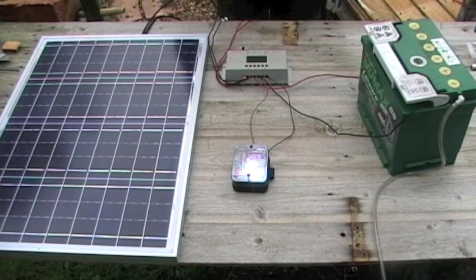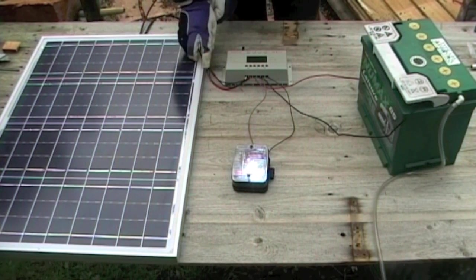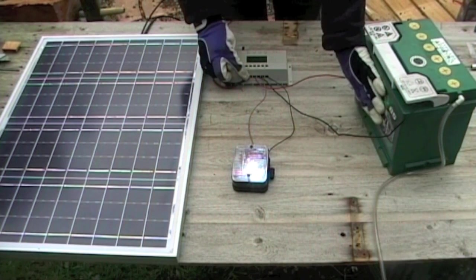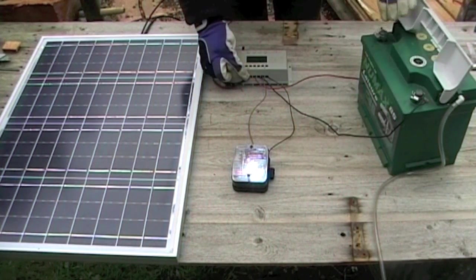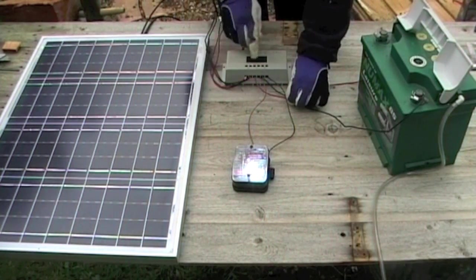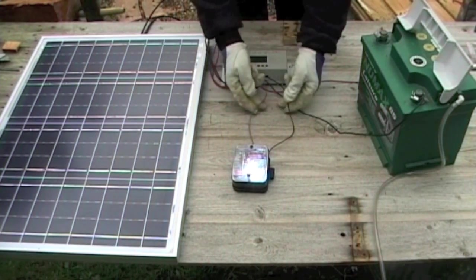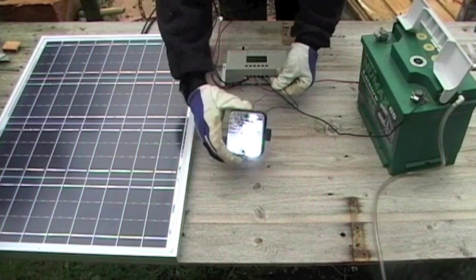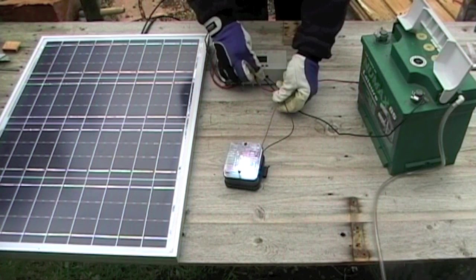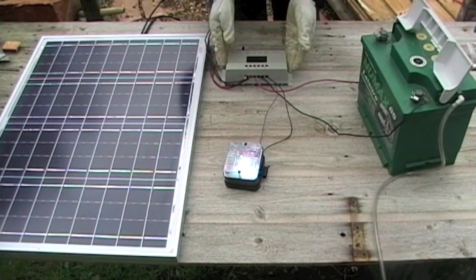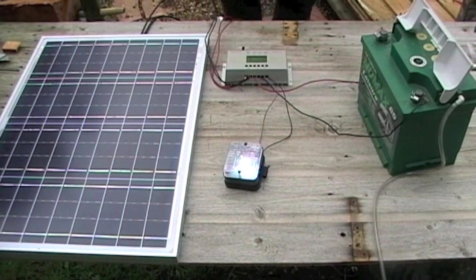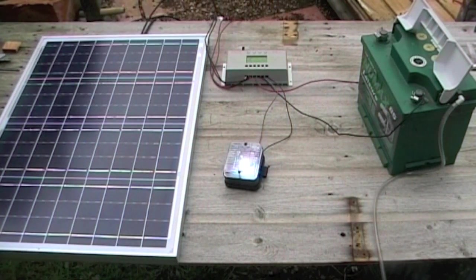So that's the setup all working. The panel connected to the charge controller here. The battery, positive and negative, also connected to the charge controller. And the light, also connected to the charge controller. The charge controller sits in the middle, managing the power and keeping everything safe. I got all this for just over £100.